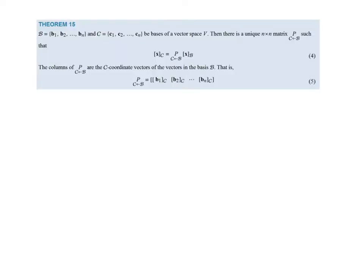Now we move into a theorem that talks about that matrix from the previous example. If I have a basis b and a basis c in some vector space v, then there exists a unique n-by-n matrix such that the coordinate vector for x relative to c equals that matrix times the coordinate vector for x relative to b. This matrix is sometimes called a change of coordinates matrix, or just a change matrix.